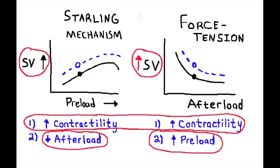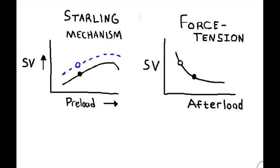If you understand these concepts, you should be able to figure out the following exercise. A drug was given to a patient and it caused the following changes on the Frank-Starling and force-tension graphs. The black solid dot represents the stroke volume, preload, and afterload before the drug was given. The open dot represents those values after the drug was given. It's up to us to figure out the mechanism of the drug and from there, hopefully, derive the drug itself.